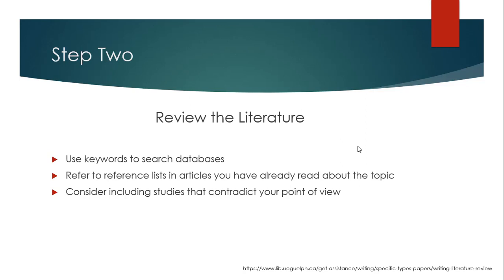Step two: review the literature. Use keywords to search databases — we want to use academic databases that give us access to journals, not just Google. Also refer to reference lists in articles you have already read about the topic. For example, if you had certain literature on a topic at QRTA, it would be useful to go back to those articles, look at the reference lists, figure out who's doing work on what, and use that as a starting point for gathering literature relevant to your literature review.